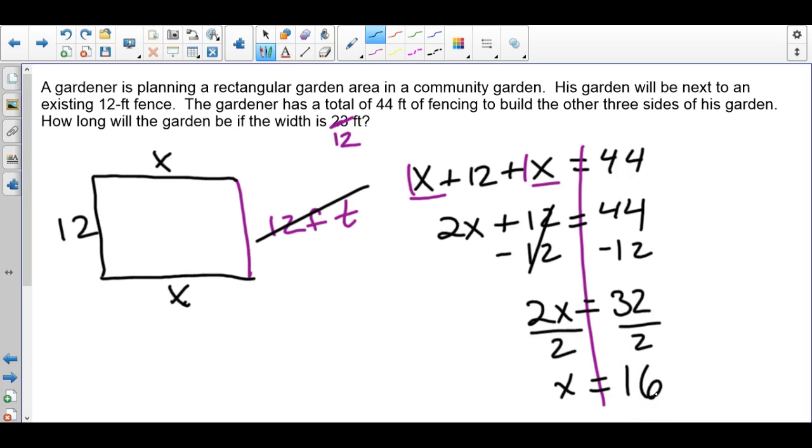You can always double-check to make sure that makes sense. If these two sides were 16, 16 plus 12 is 28 plus another 16 is 44—that's how much fencing we had.